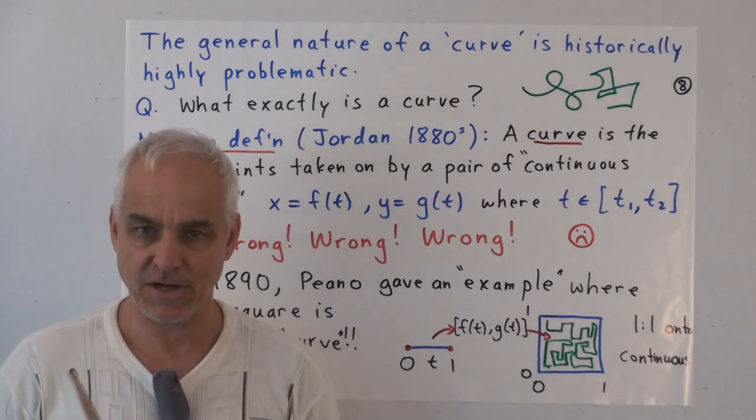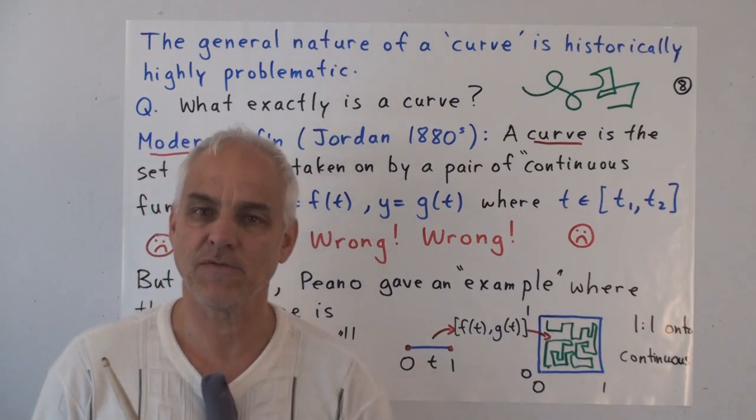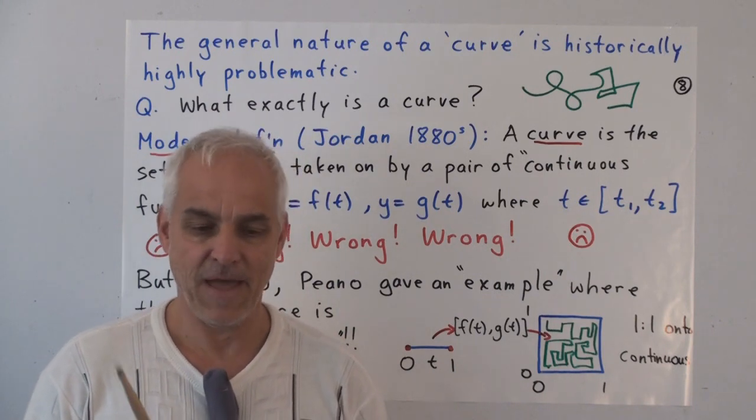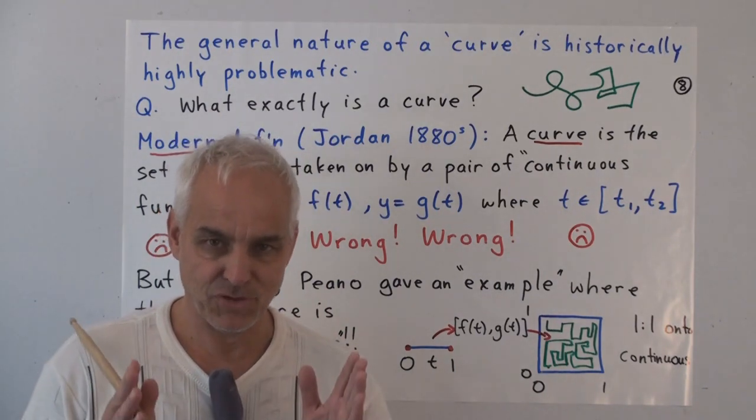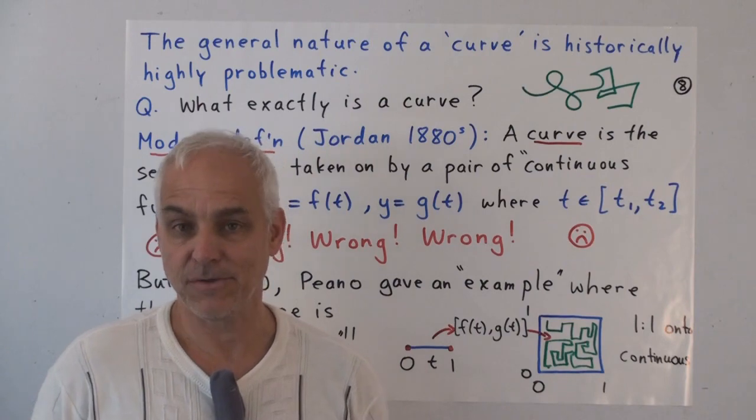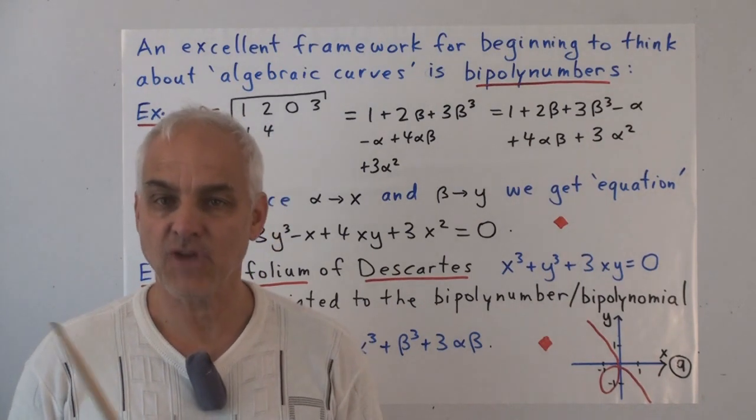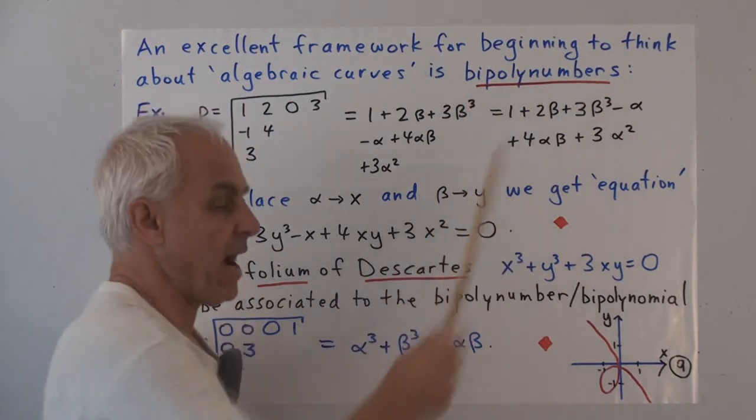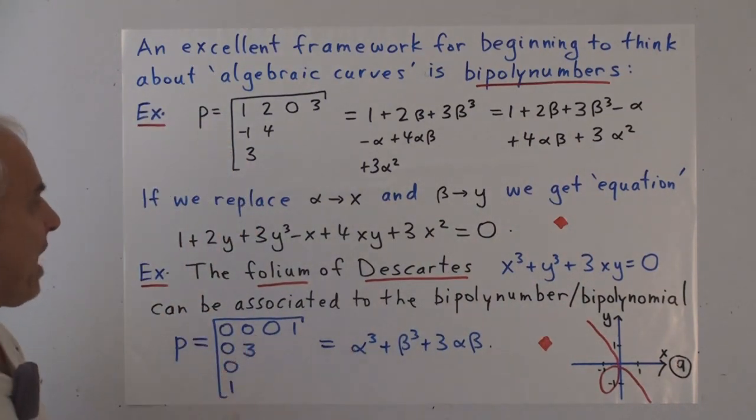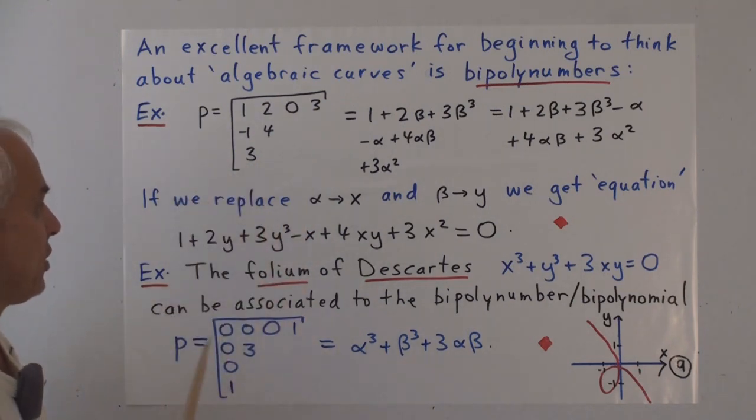If the notion of a curve is perhaps at this point too ambitious, perhaps we should scale down our intentions and try to do something more modest. Why don't we stick with algebraic curves just the way Descartes urged us to do? That's much more amenable, much more treatable with logical clarity. And there's a natural way forward going back to Descartes and Newton and the pioneers of the subject. An excellent way of starting to think about curves is by using the framework of bi-poly numbers.